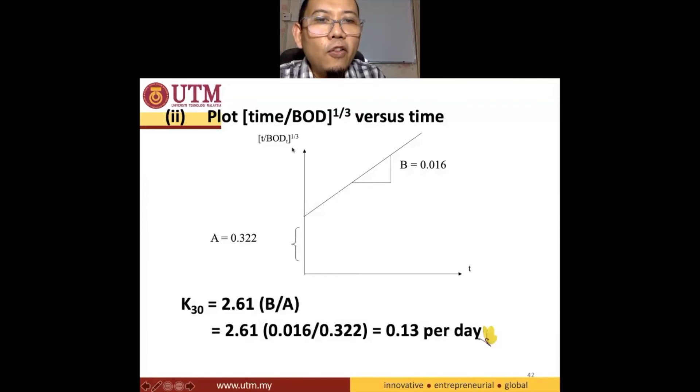You'll be able to see this kind of graph. Then you calculate the slope or the gradient, and B is equal to 0.016, and our A is 0.322, or the intercept is 0.322. So you remember your K30 is equal to 2.61 times B divided by A. So 2.61 times this value divided by A is equal to 0.13 per day. With a butterfly here flying here. 0.13 per day. I'll give you time to write down this.